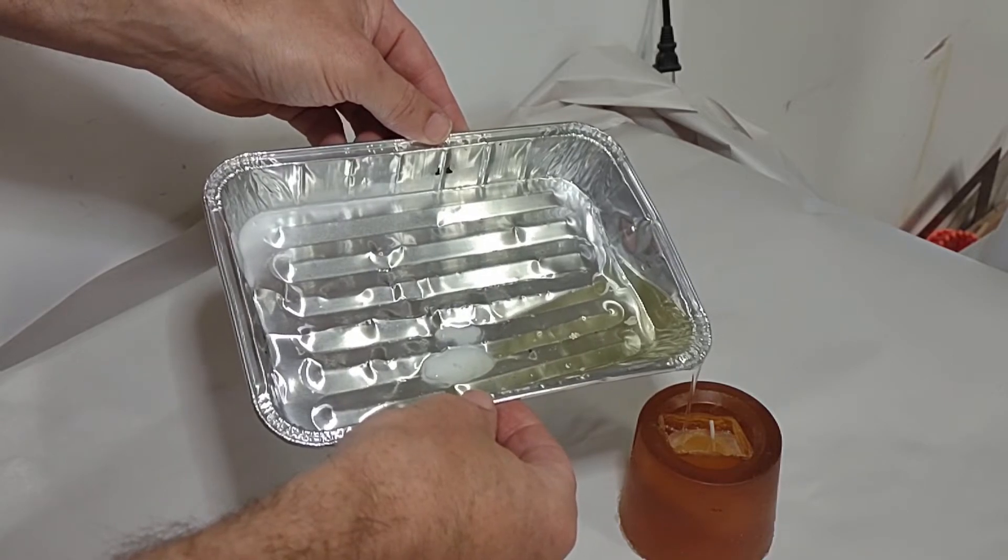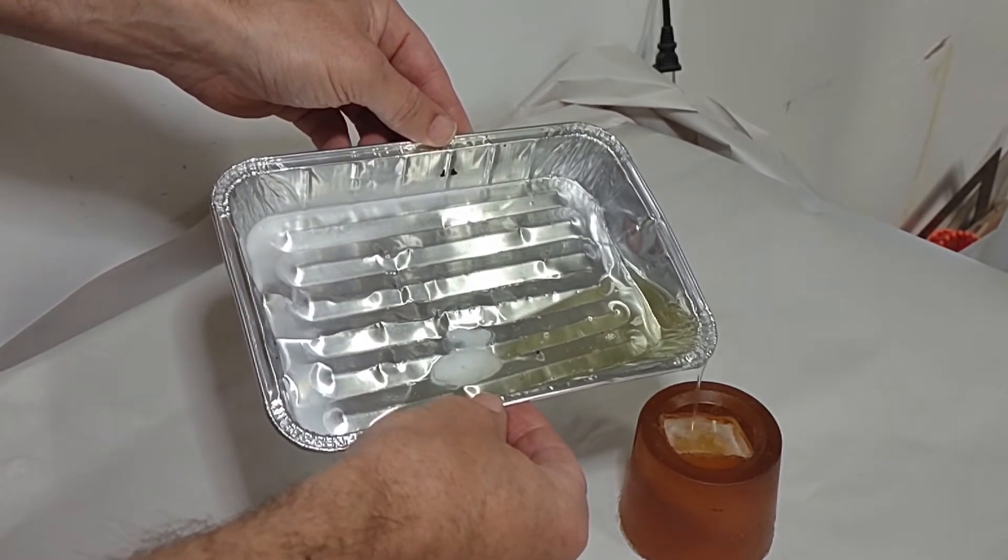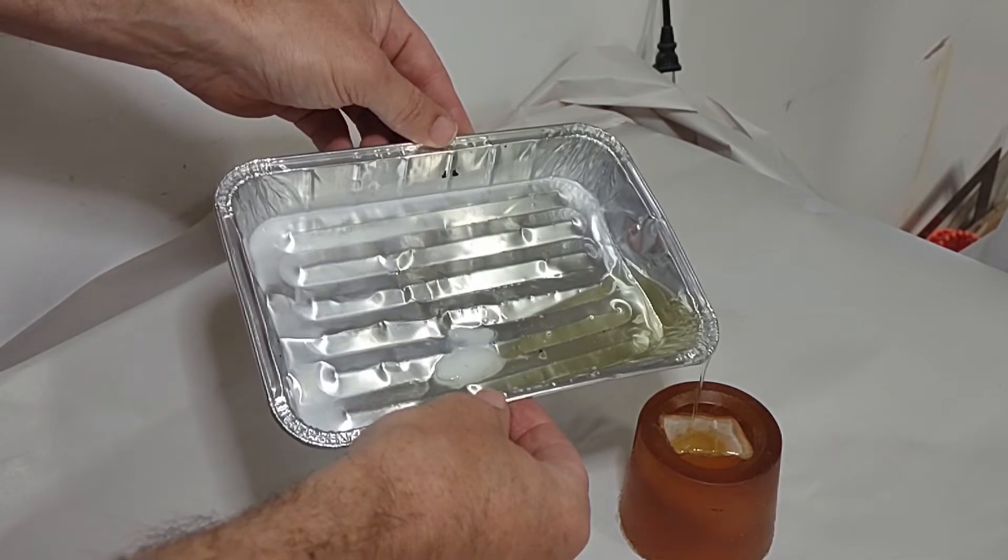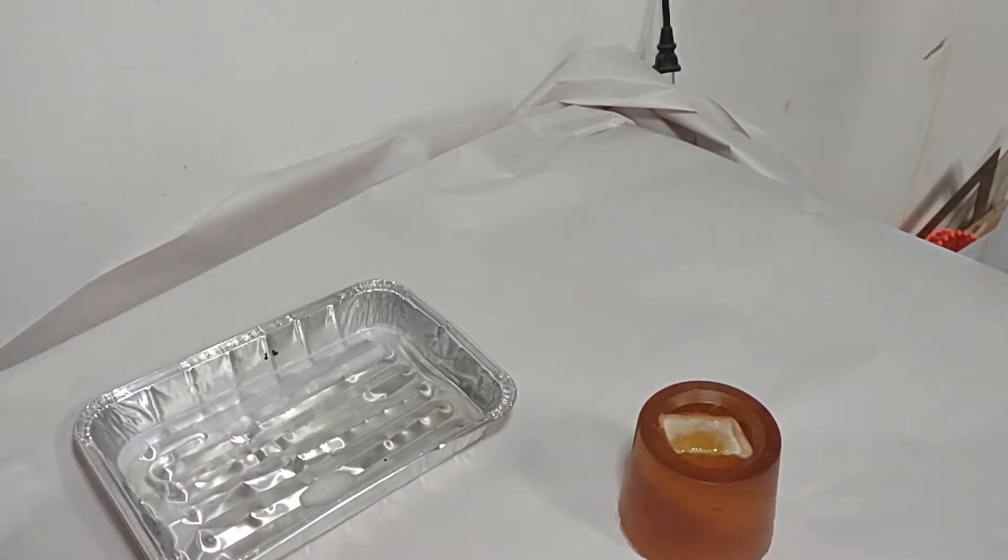Now this is the coolest part, as you pour in the wax into the mold you will see it turn white as it hits the surface of that mold. That creates this barrier so that it won't melt the composite mold.